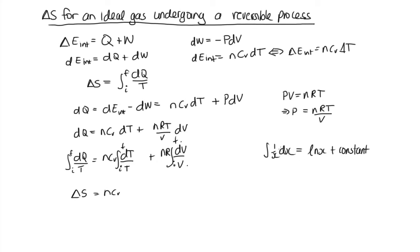The important point is that dx over x, when we integrate that, we end up with log x. So we end up with the integral log T from the initial state to the final state, plus nR log V from the initial state to the final state. This equals nC_v log of the final temperature minus log of the initial temperature, plus nR log of the final volume minus log of the initial volume.